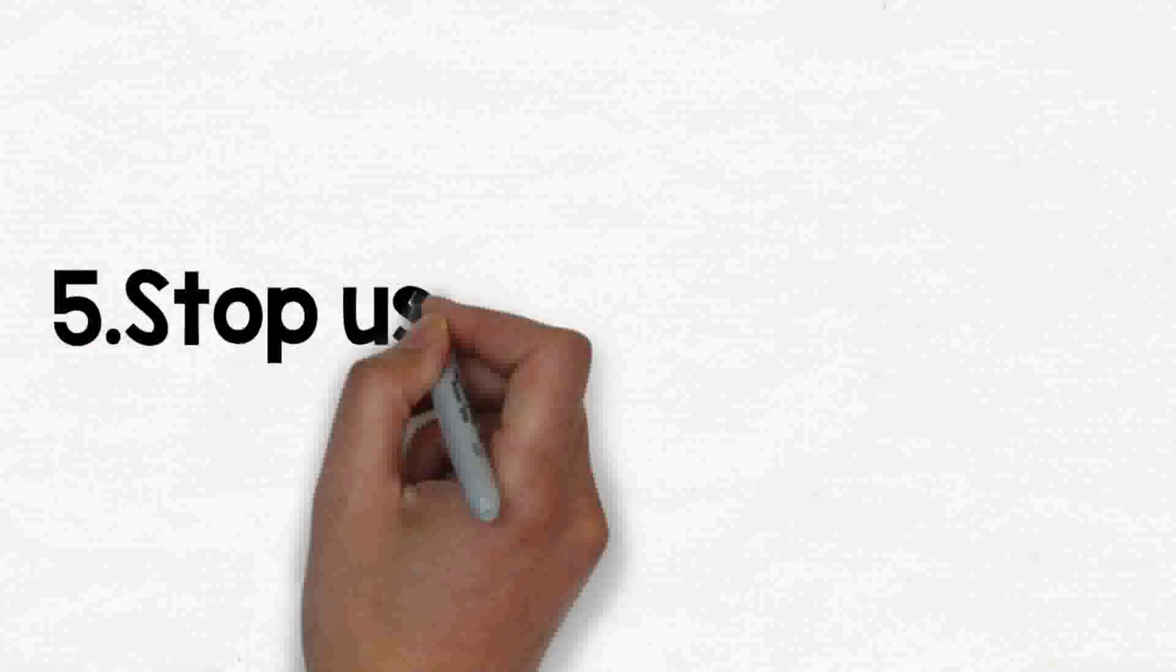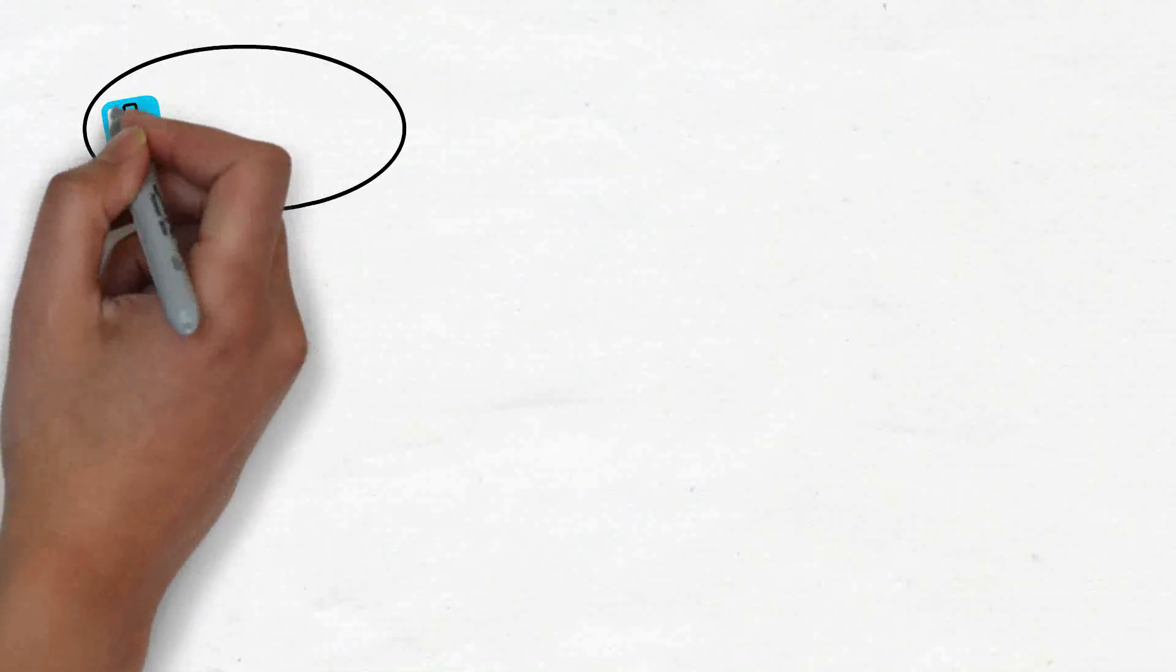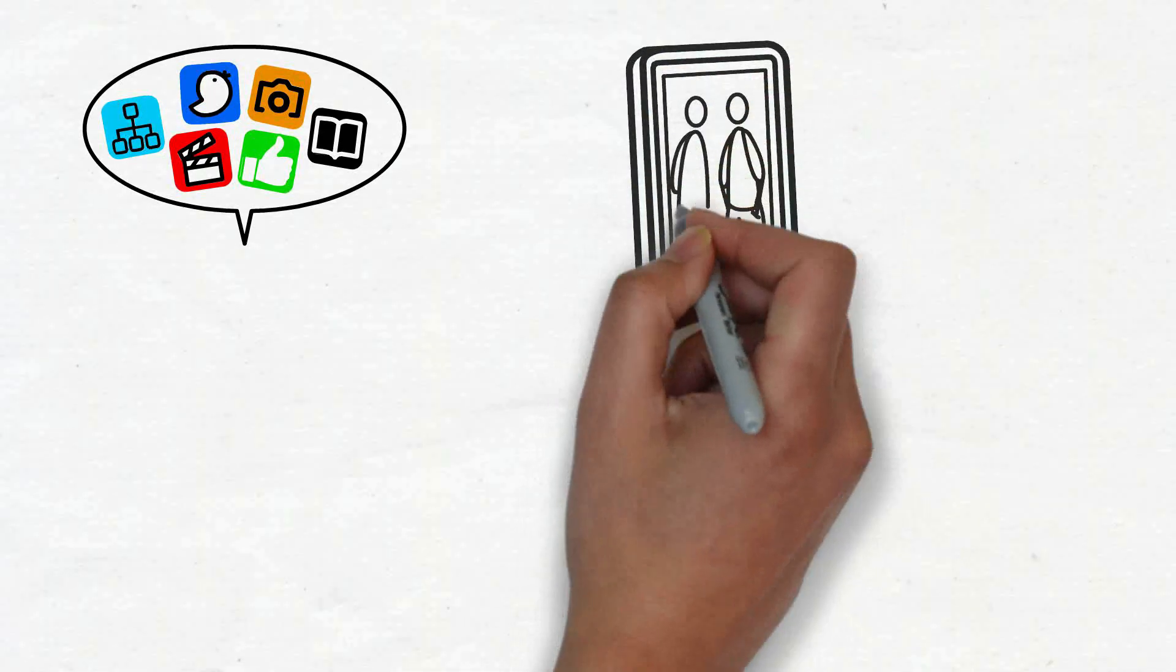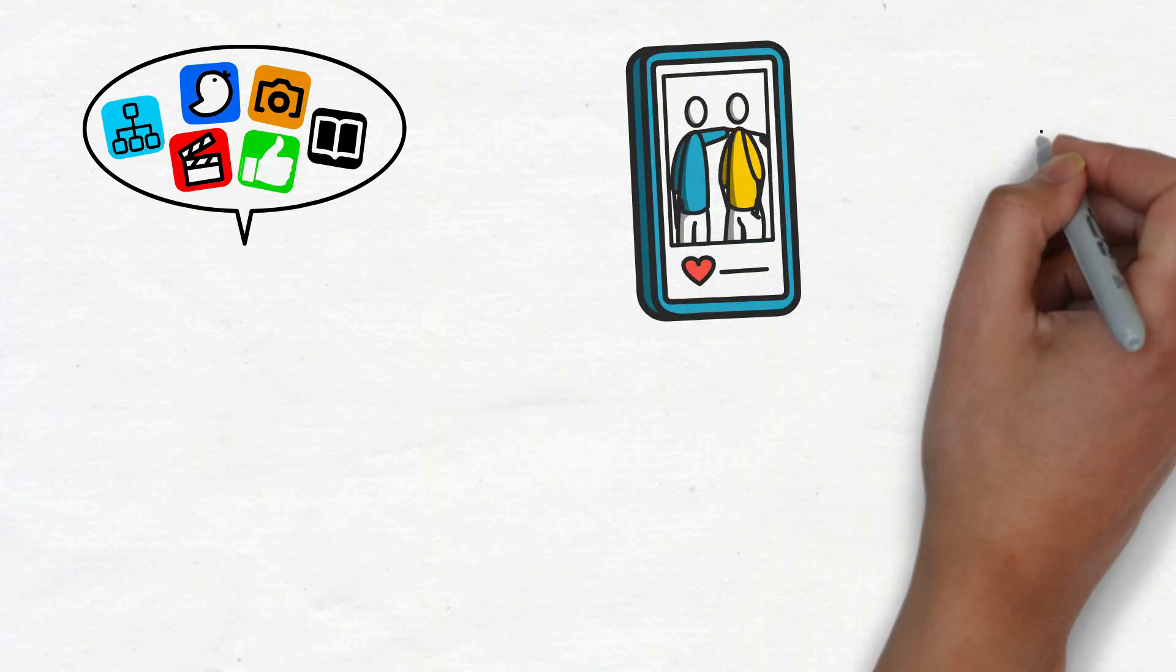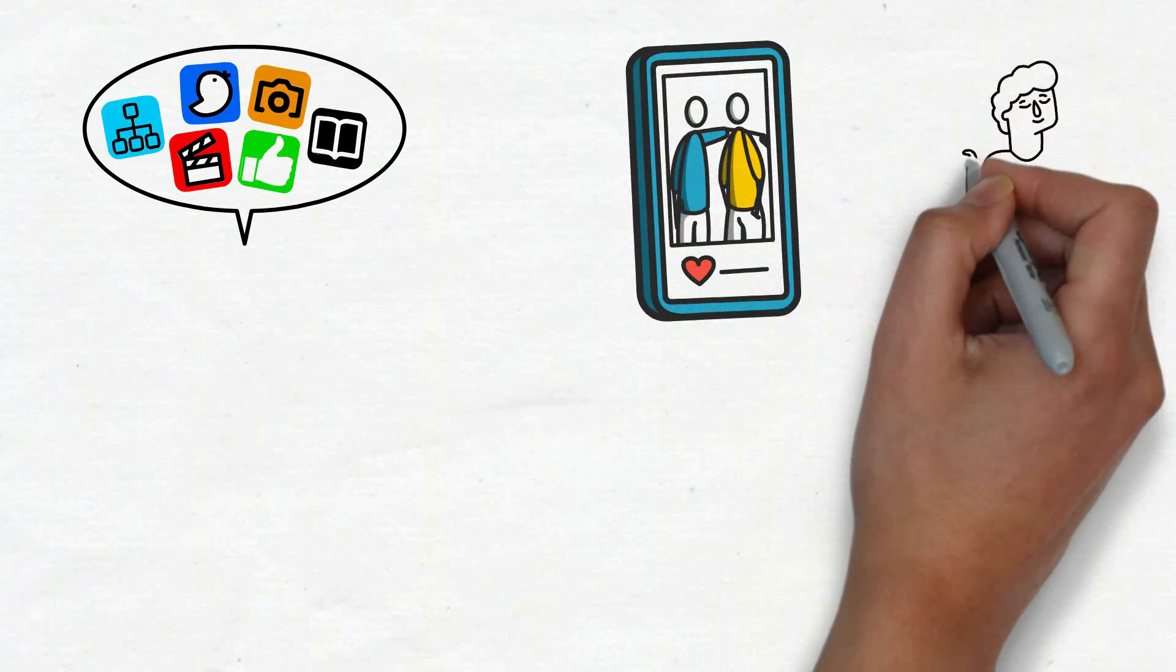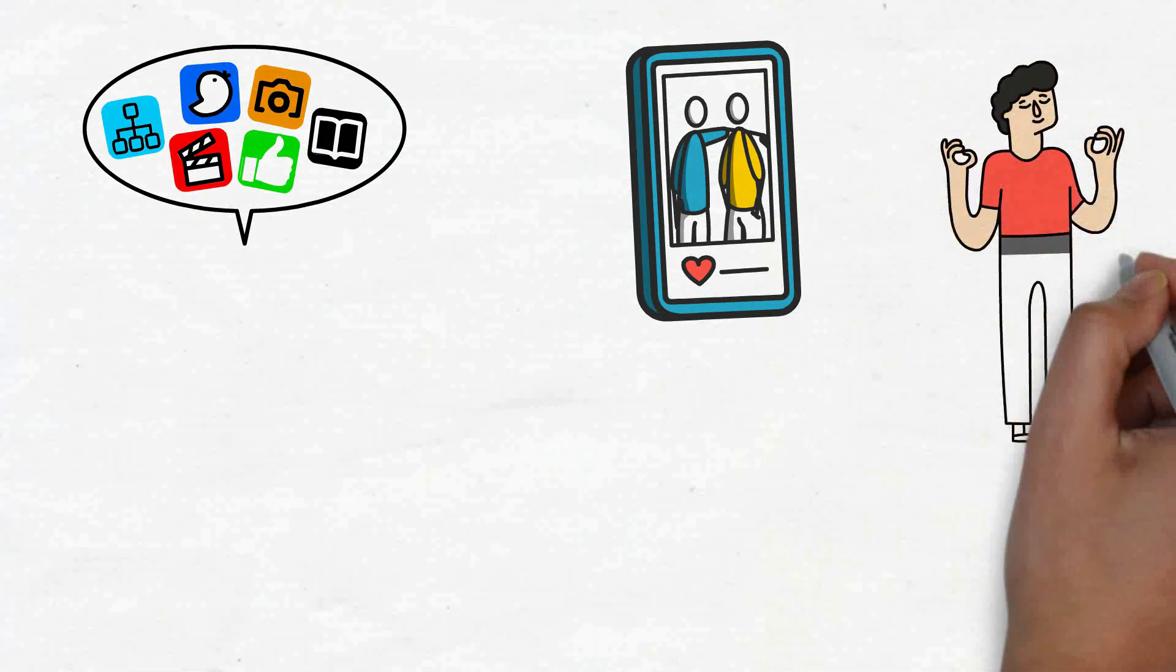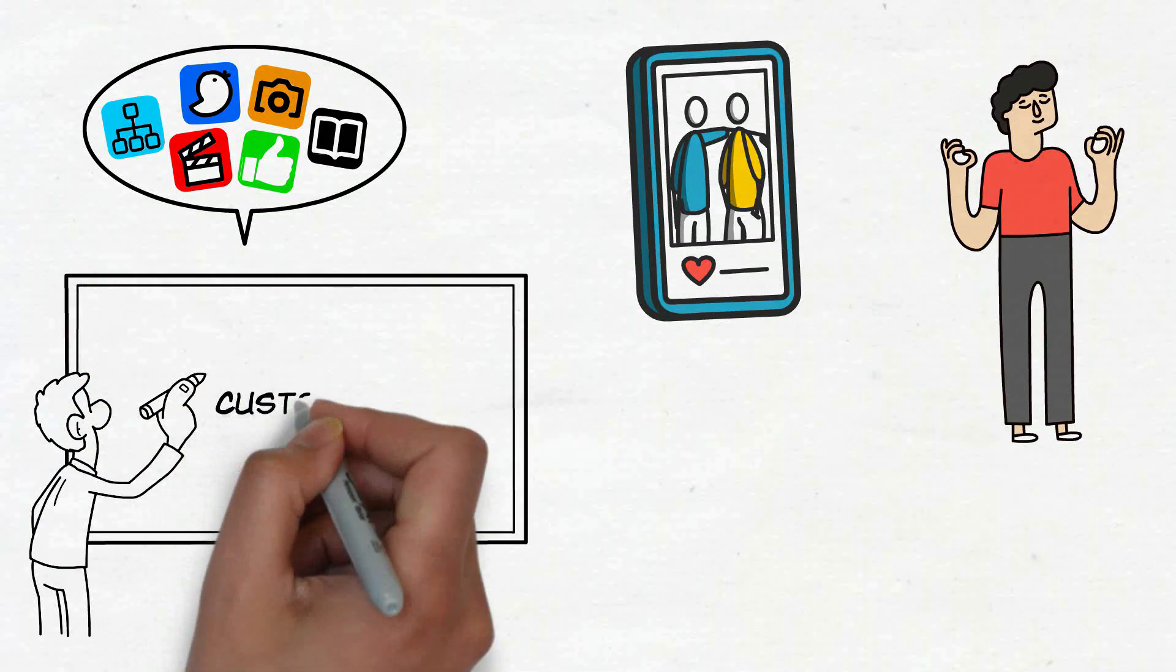5. Stop using social media. It's true. Using social media won't help you if you're having issues with comparisons. If you're aware that scrolling past everyone's highlight reel makes it difficult for you to be content, address the root of the issue. I'm not suggesting you have to give up social media permanently, but give Instagram and Facebook the boot for a week, or more, and see if anything changes.